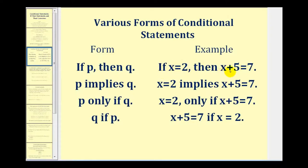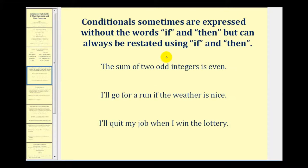So 'if x equals two then x plus five equals seven' could be expressed as: P implies Q, or 'x equals two implies x plus five equals seven'; or P only if Q, meaning 'x equals two only if x plus five equals seven'; or P if Q, meaning 'x plus five equals seven if x equals two.' Conditionals can sometimes be expressed without the words if and then, but can always be restated using if and then.